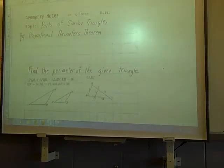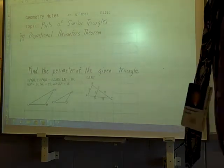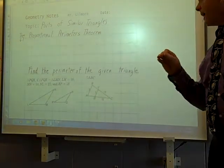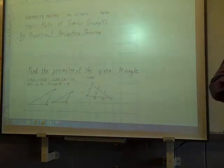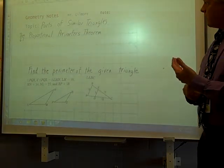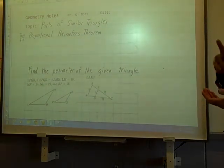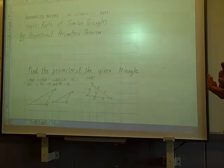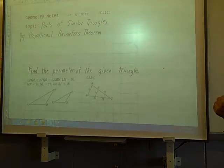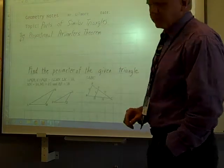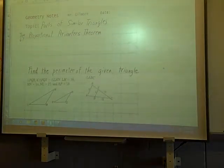Hi everyone, parts of similar triangles. The first theorem is going to deal with perimeters, then it's going to deal with altitudes, medians, and so on. What I want you to do is take these notes down. First notes: proportional perimeters theorem.